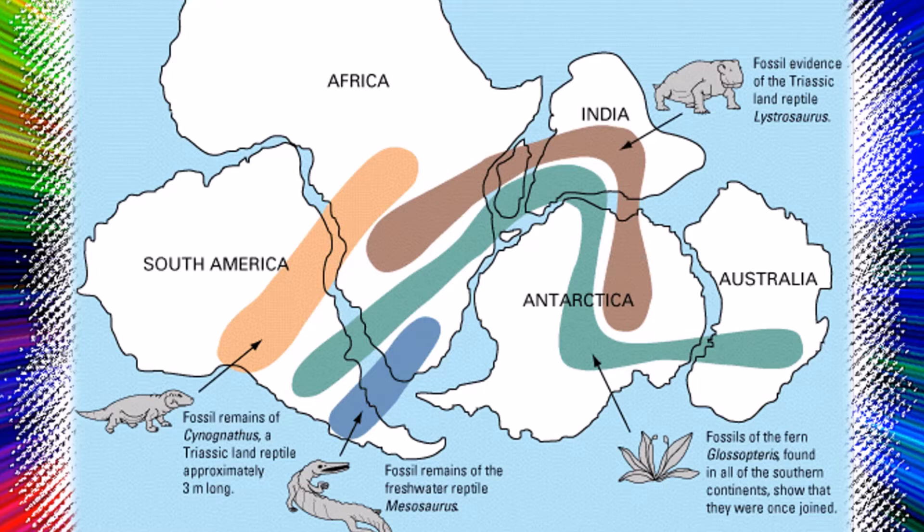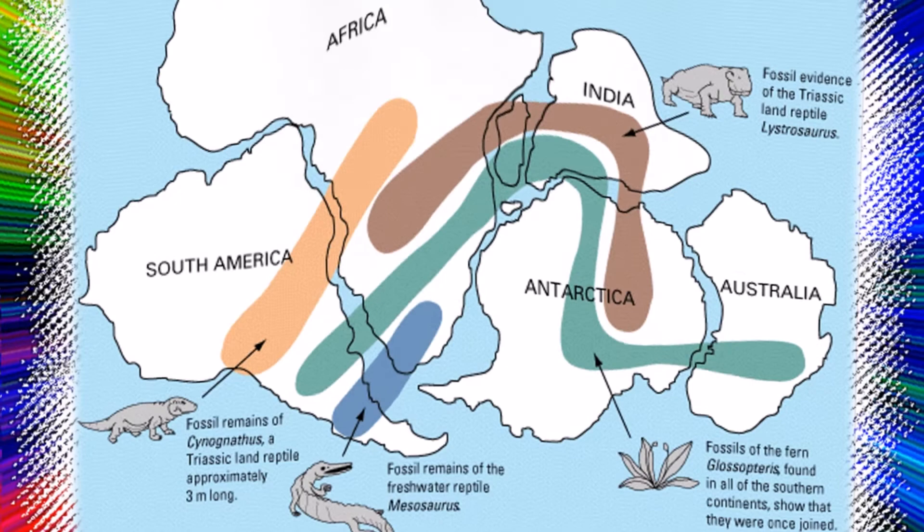At each location, the tillites were subsequently covered by desert sands of the subtropics, and these in turn by coal measures, indicating that the region had arrived near the paleoequator.